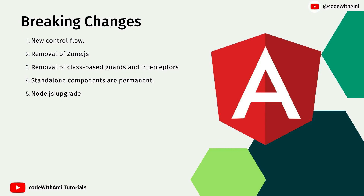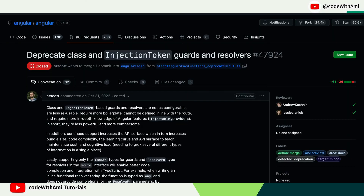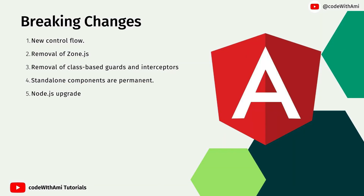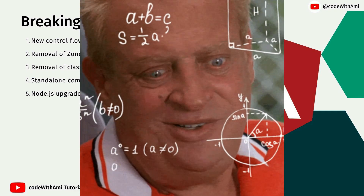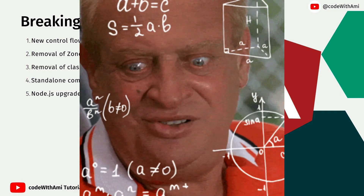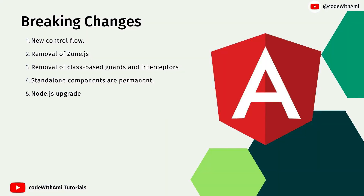The third breaking change is the removal of class-based guards and interceptors. We have already seen in Angular 15 and 16 that they introduced function-based interceptors and guards. canActivate guard is also deprecated. This is going to be a permanent change, and when you upgrade to the latest version you will have to move to function-based guards and interceptors. Again, I'm not sure whether this will happen automatically on upgrade or if you will have to do it manually.